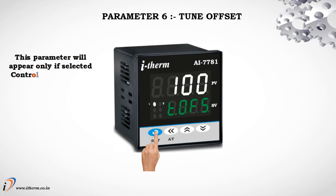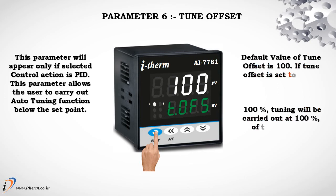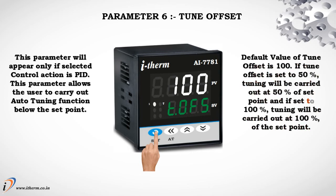Parameter 6 is Tune Offset. This parameter will appear only if the selected control action is PID. It allows the user to carry out the Auto-Tuning function below the set point. The default value of Tune Offset is 100. If set to 50%, tuning will be carried out at 50% of the set point; if set to 100%, tuning will be carried out at 100% of the set point.